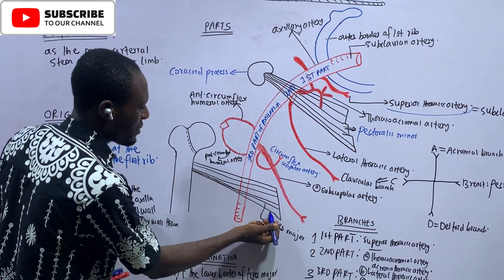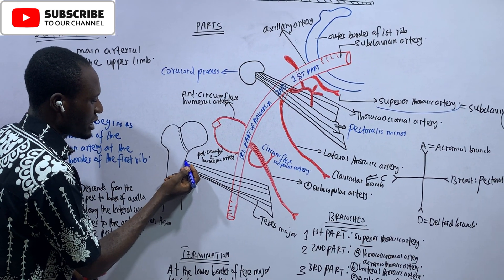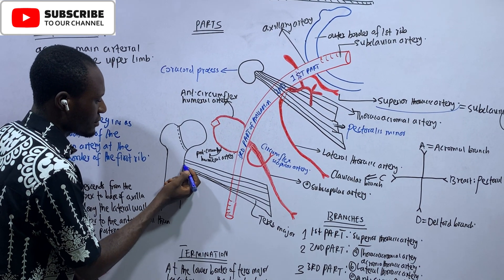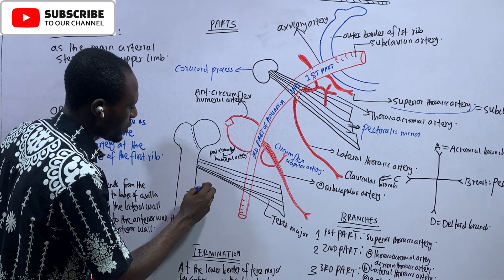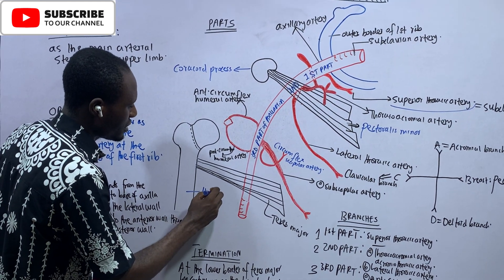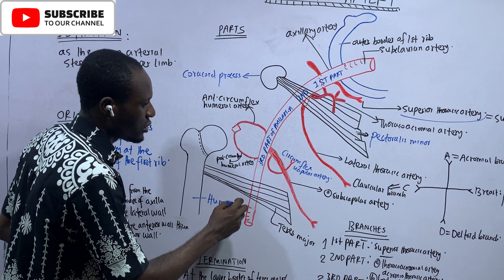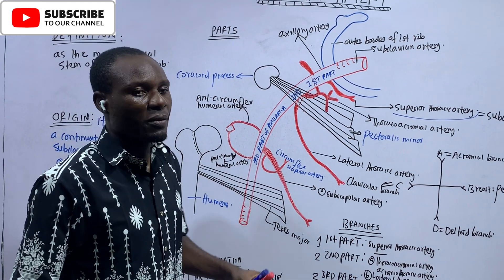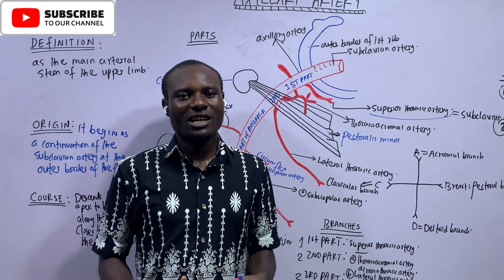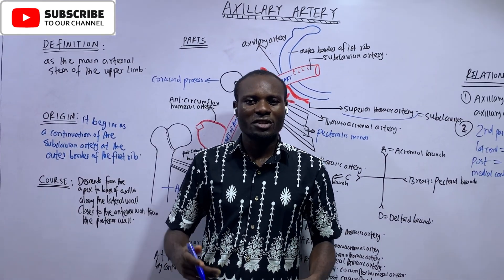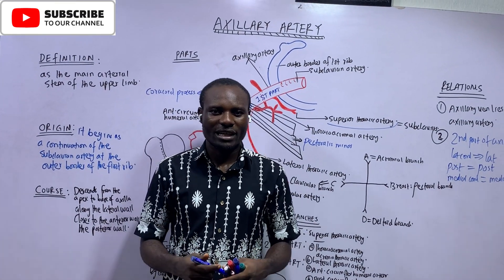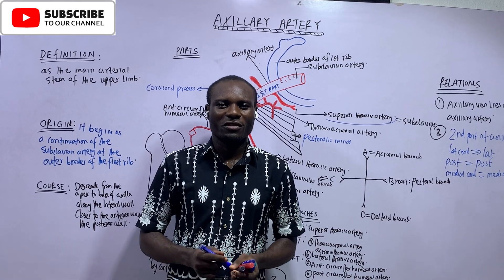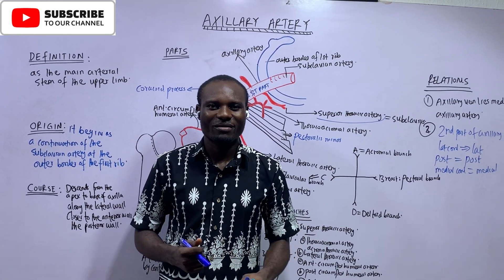The teres major inserts at the medial lip of the intertubercular sulcus of the humerus. We have been able to discuss in depth the axillary artery, its branches, and the role of the pectoralis minor in this very important division. Thank you very much.